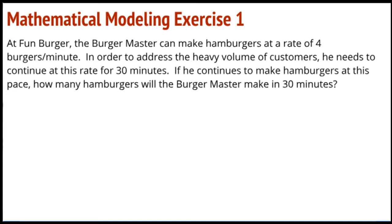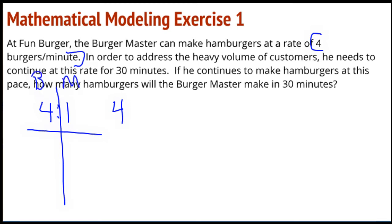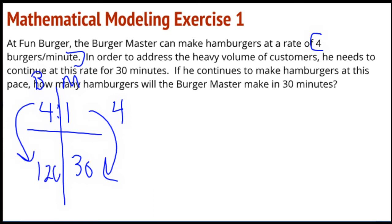Hopefully you're hearing rates and ratios in this problem. You're hearing a rate of four burgers per minute, and in your mind you're probably thinking there's our ratio of four to one. You can scale this up — here are my burgers, here are my minutes — and scale up to 30 minutes to figure out that he's going to make 120 hamburgers. This is the foundational thinking we want, but today we're going to look at this in a different way.